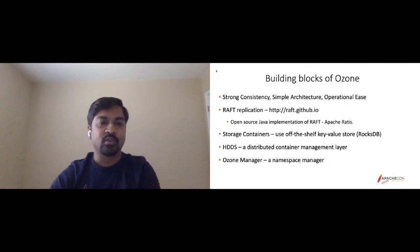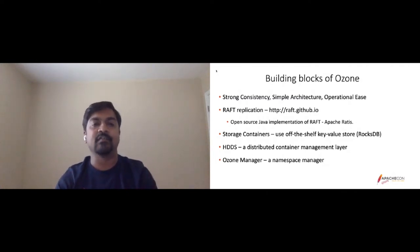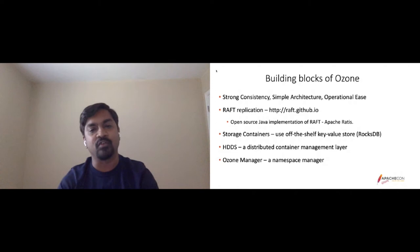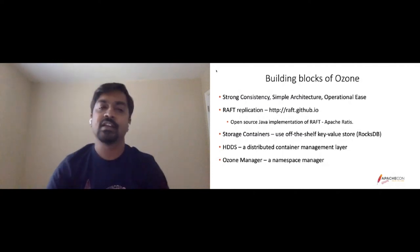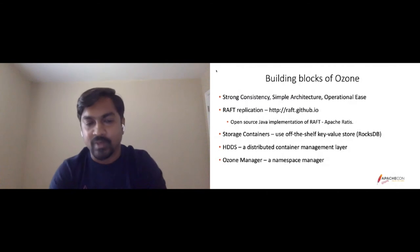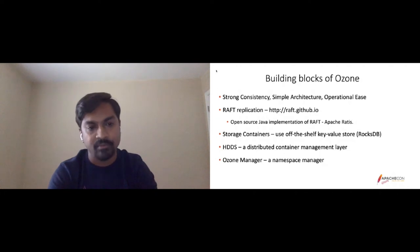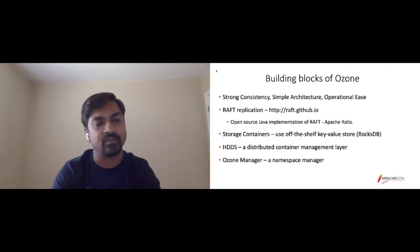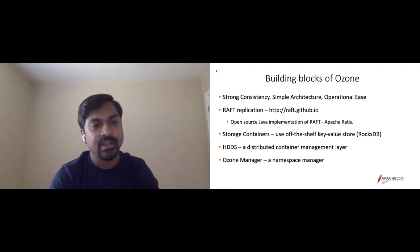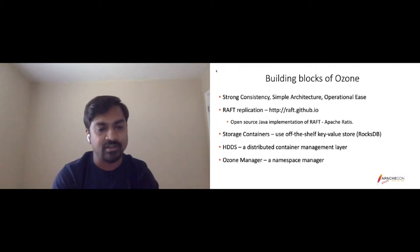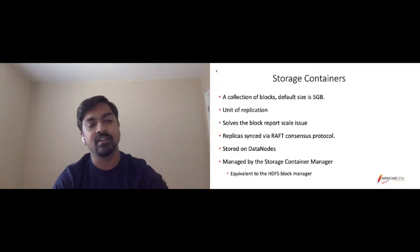Storage containers are a collection of blocks with a default size of five gigabytes. We aggregate reports for a container and all its blocks, sending them to the namespace manager instead of reporting each block individually. A storage container is the unit of replication — it solves the block report scale problem. The Raft protocol handles syncing replicas and consensus between leader and follower. These containers are stored on data nodes and managed by the Storage Container Manager, equivalent to the HDFS block manager.